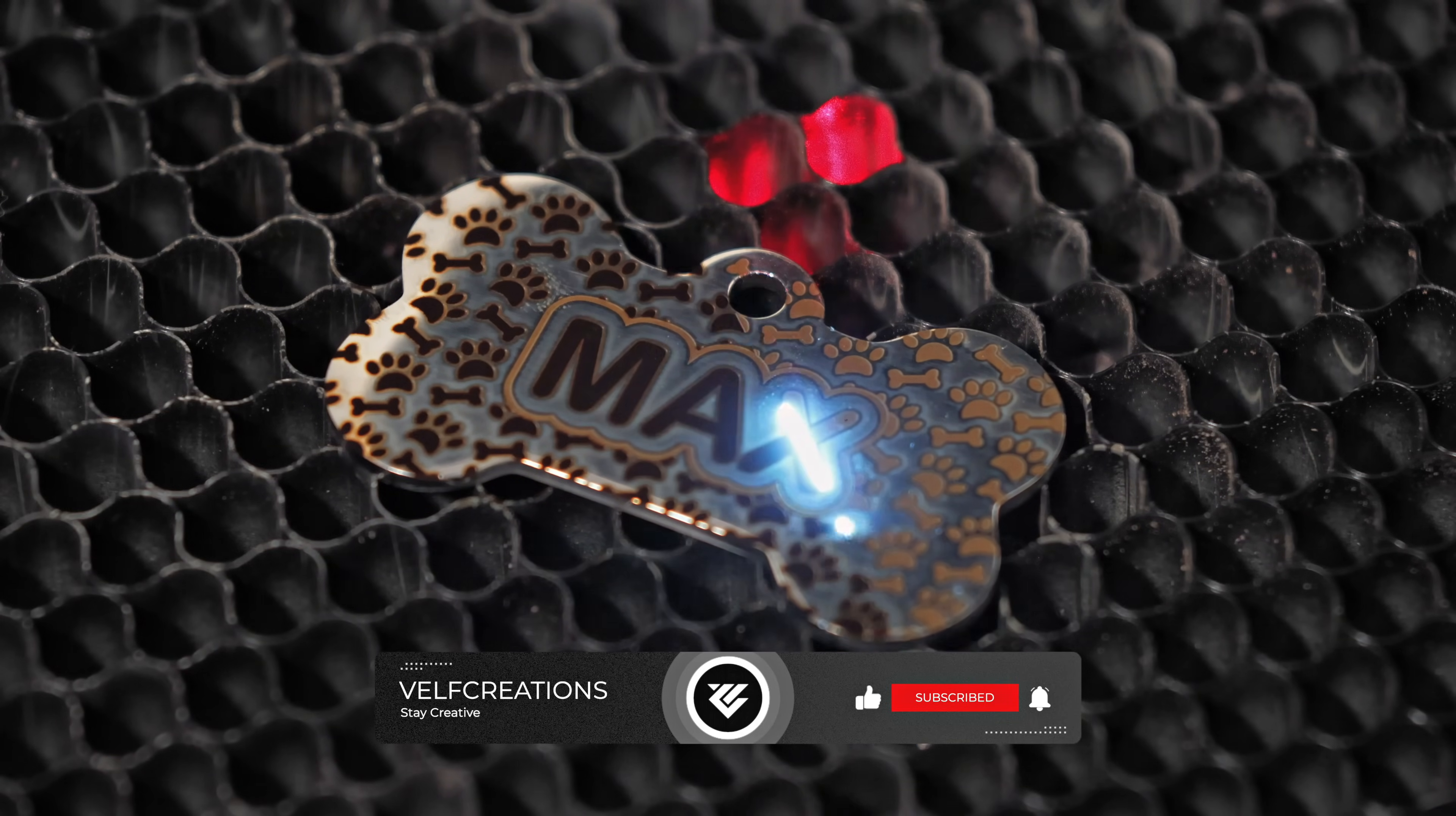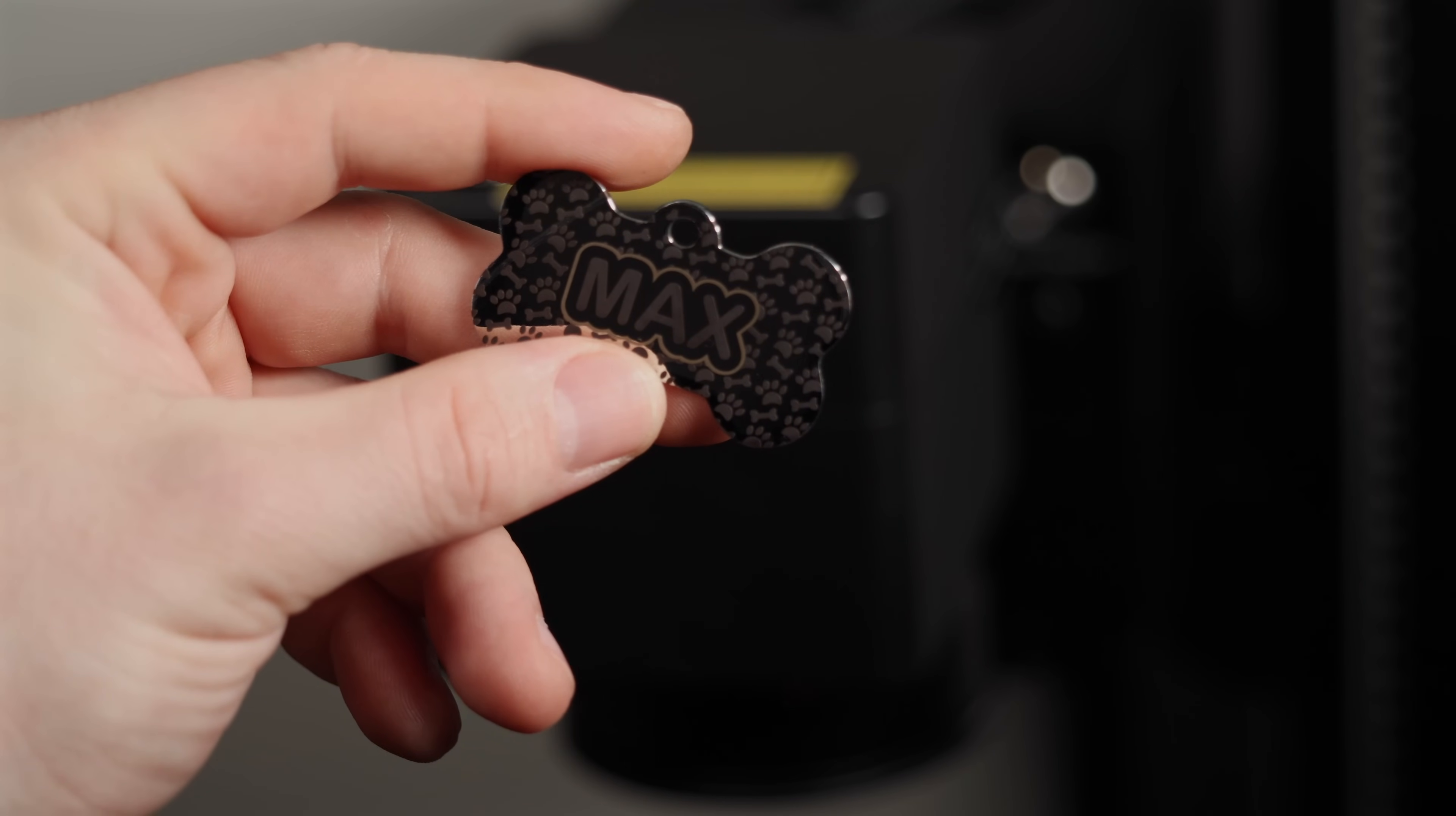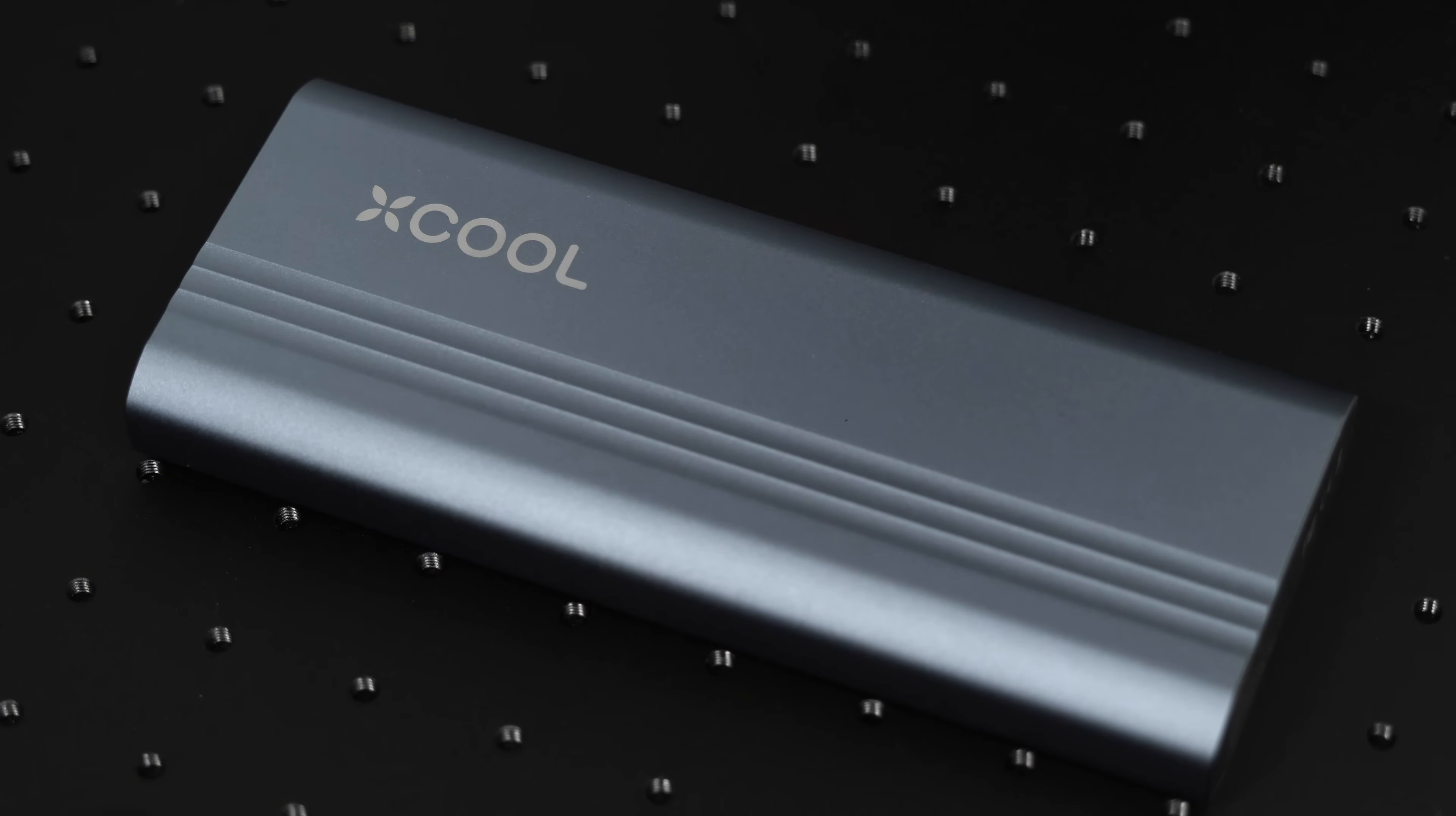One thing we noticed while testing these materials is that sometimes our first attempt didn't turn out perfectly. However, the Omni one UV laser is surprisingly forgiving when your settings aren't spot on. As long as you don't move your piece, you can simply adjust the settings and rerun the engraving to get it just right. It's a game-changer for tricky materials.